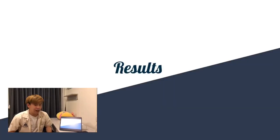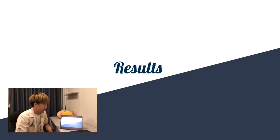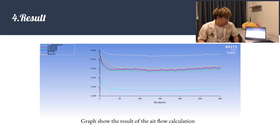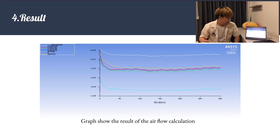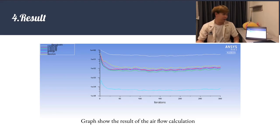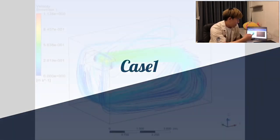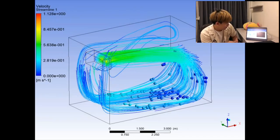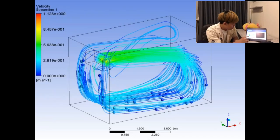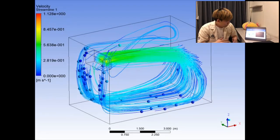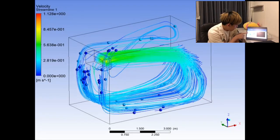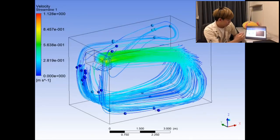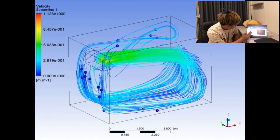After the setup, we computed the solution. The residual graph trends steadily downward until reaching steady state. For Case 1 with one air conditioner, the flow moves forward with high velocity toward the edge of the room, but cannot cover the entire room. The streamlines show a circular motion without much airspeed in the middle of the room.